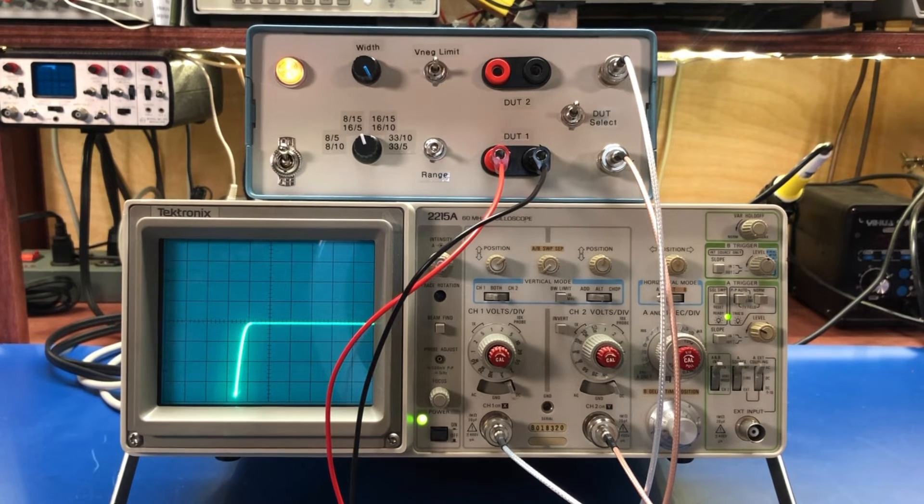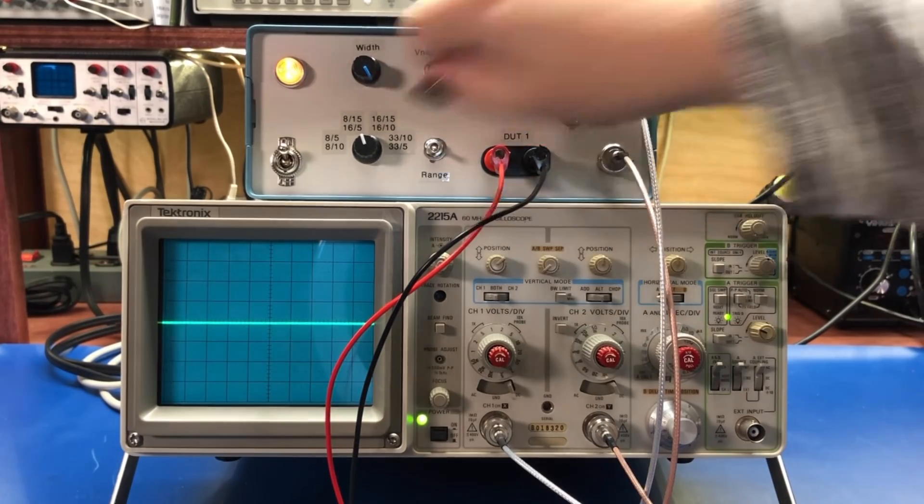But this is good. It'll limit the negative voltage swing to about 0.6 volts. So if you have components that are sensitive to negative voltage, you can just click that into the circuit and it will limit that.